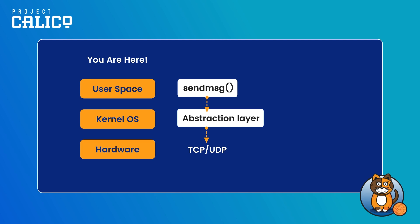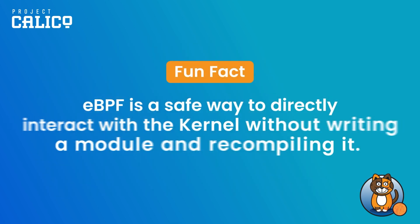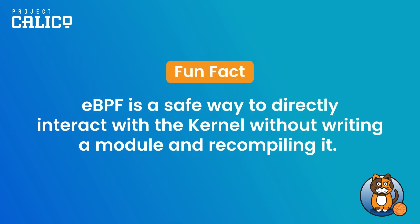With eBPF, you can intercept these system calls while they are running or change the behavior of these system calls in the kernel. For instance, if something is running in a pod or in a process, you could kill it and say this is not safe. eBPF is a superpower inside the kernel that allows you to interact directly with the kernel without compiling it.